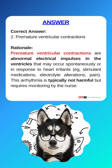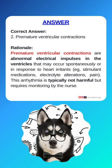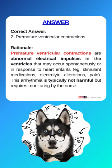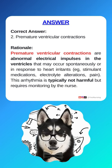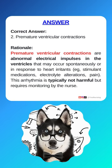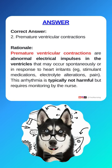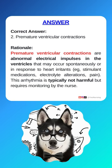Correct answer: 2. Premature ventricular contractions. Premature ventricular contractions are abnormal electrical impulses in the ventricles that may occur spontaneously or in response to heart irritants, such as stimulant medications, electrolyte alterations, or pain.